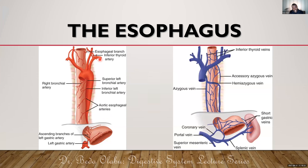It is important that we understand the blood supply to the esophagus because of the various pathologies sometimes seen related to it. Having mentioned that the esophagus has cervical, thoracic, and abdominal segments, the blood supply is also segmental. The vessels going to the esophagus are called esophageal arteries, and there are multiple esophageal branches of big arteries going to the esophagus.